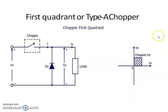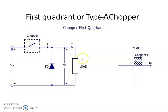First, we will discuss about the Type A chopper or first quadrant chopper. The first quadrant chopper provides first quadrant operation — that is, both output voltage and output current are positive. This is a step-down chopper. The chopper circuit consists of a switch S, a freewheeling diode FD, and the load circuit.